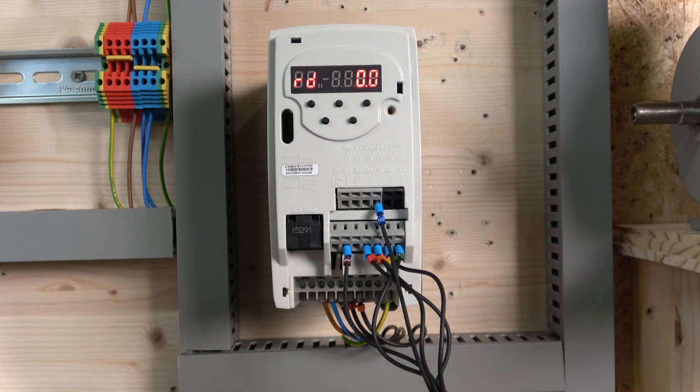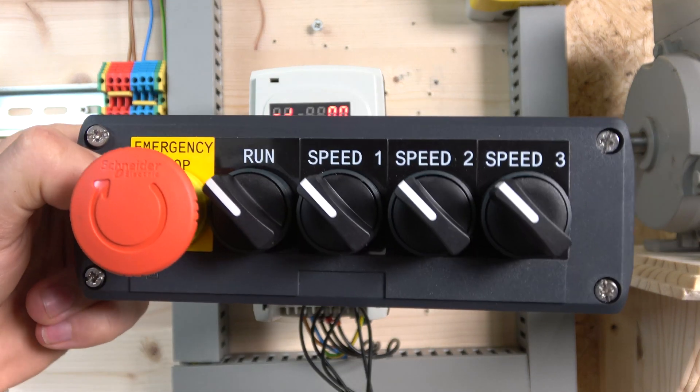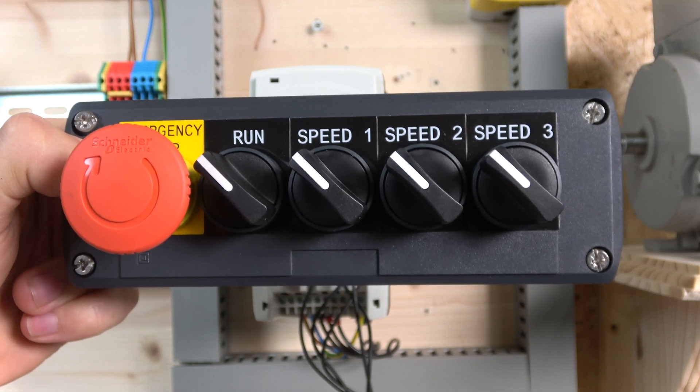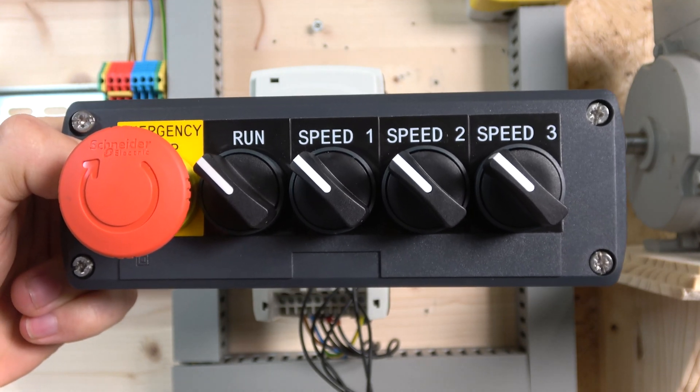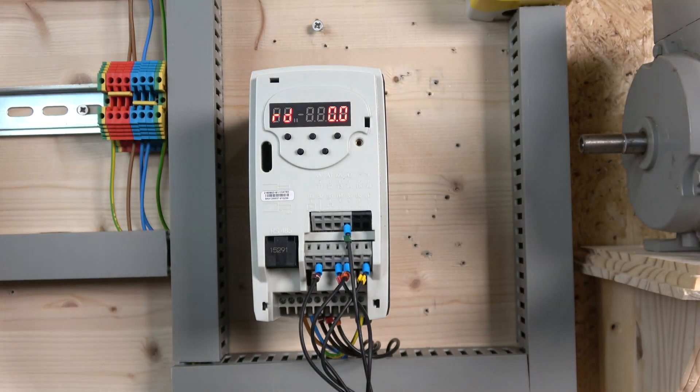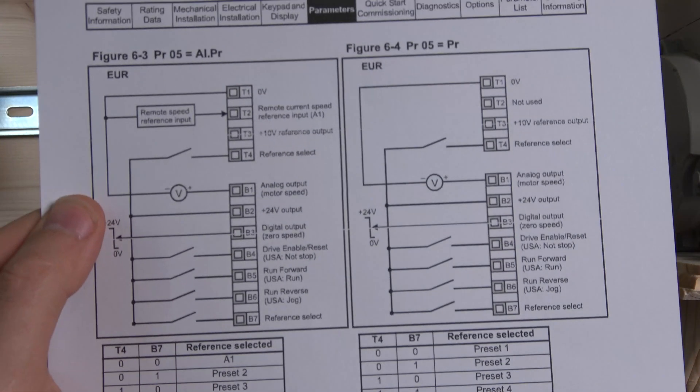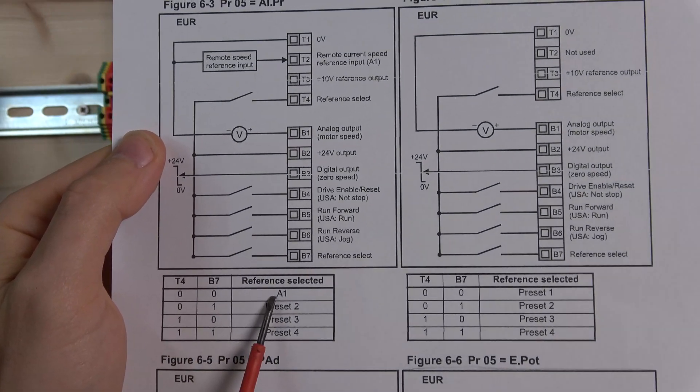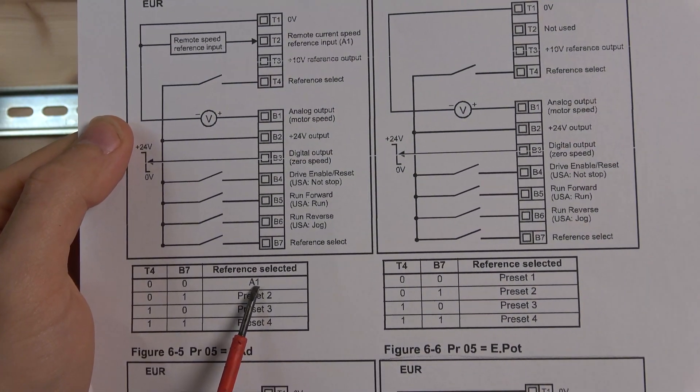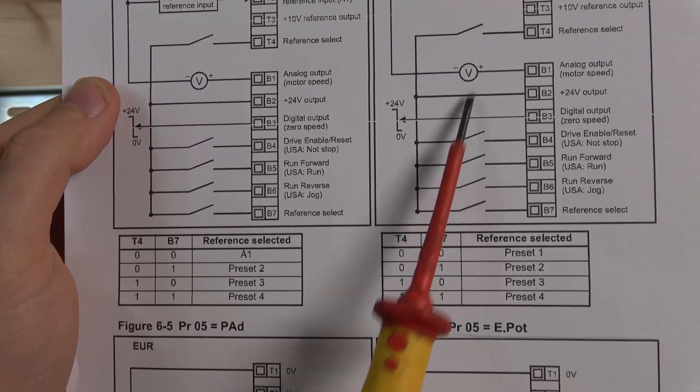For the multi-frequency, the station we are going to be using looks like this. We're going to use a run signal because remember, we do need to have a run for any of the speeds to work. We got speed 1, speed 2, and speed 3, but actually we will have four speeds. There's three options you can go with.